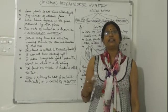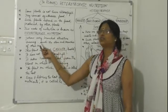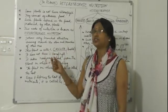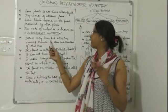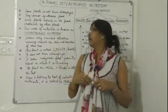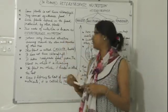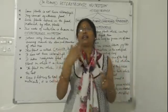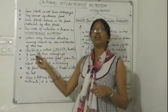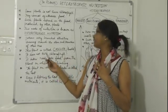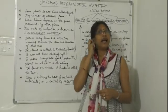First, you need to know what a parasite is. You often notice a yellow, wiry, branched structure twining around the stems and branches of other trees in your surrounding environment. This yellow, wire-like branched structure twines around the stem and branches of another tree. This plant is called Cuscuta, and its other name is Amarbel.